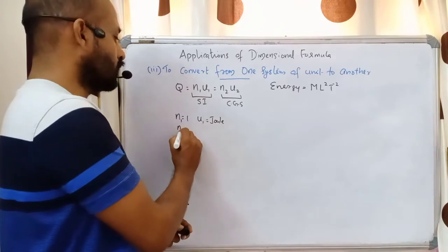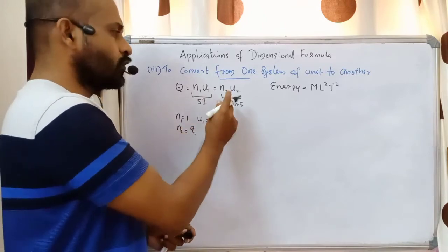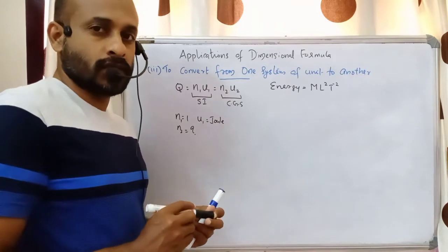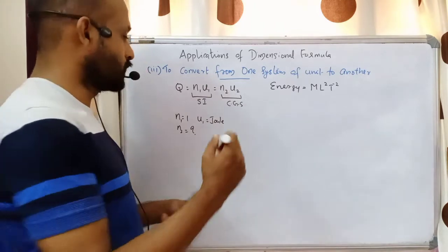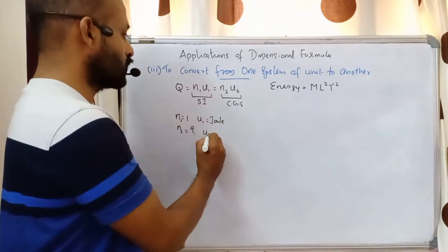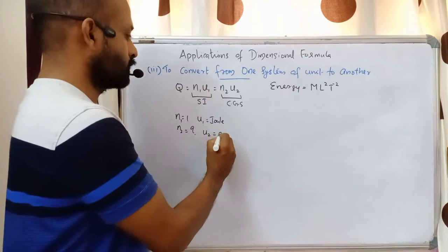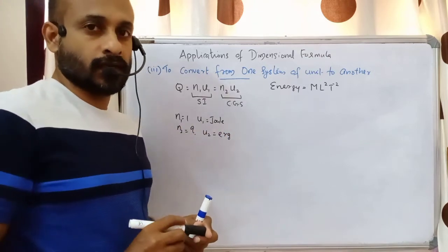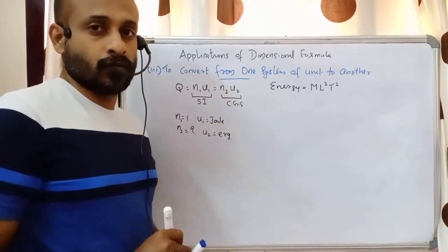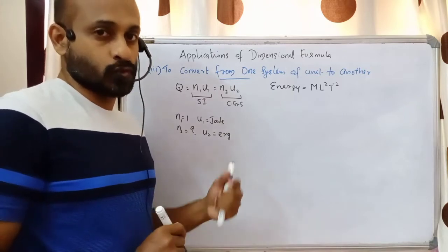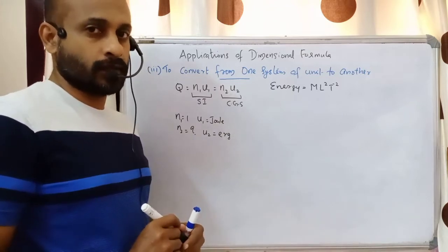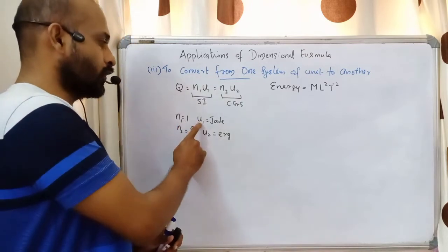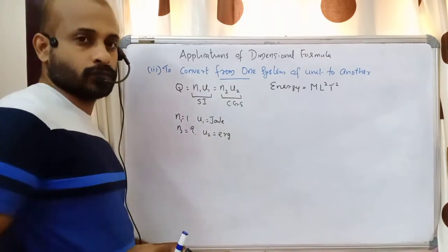N2 is what we don't know — that we need to calculate. U2 means the unit of energy in the CGS system, which is erg, so U2 is equal to erg. We need to find out how many ergs are in 1 Joule; that is our aim. We know N1, U1, U2, and we need to find N2.